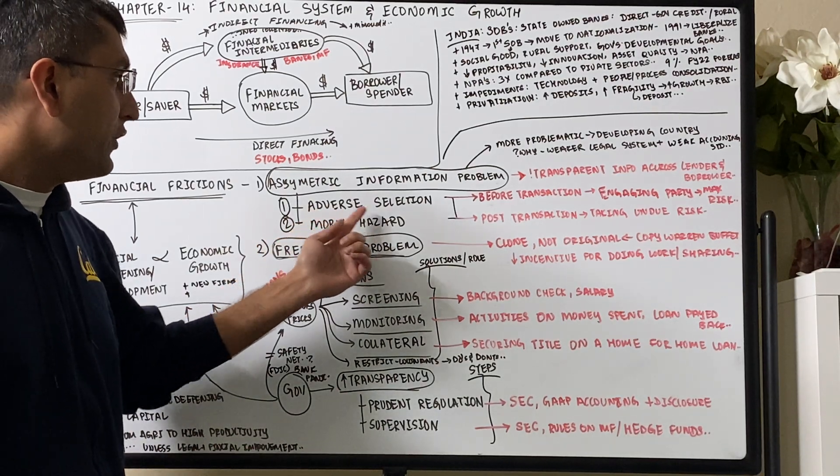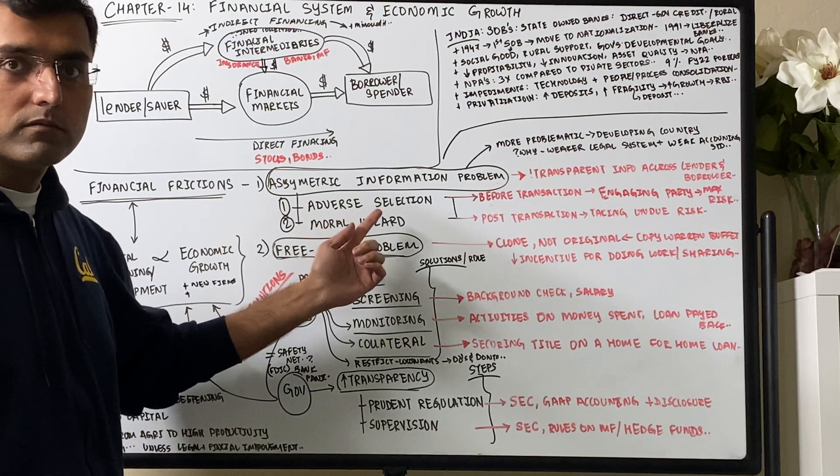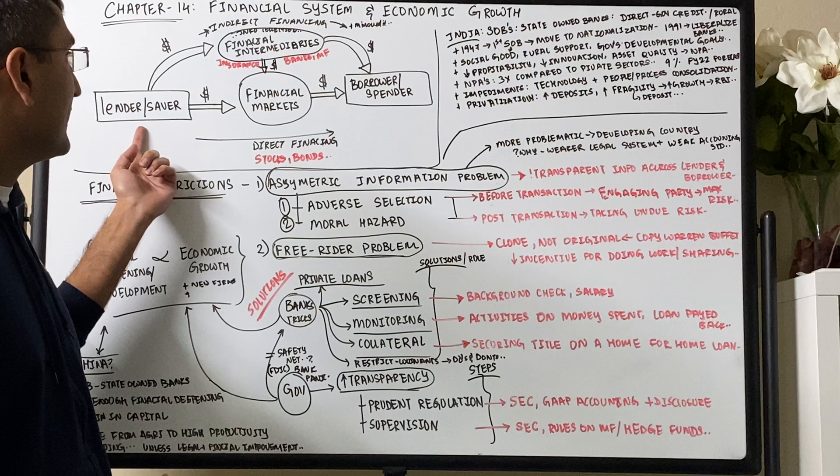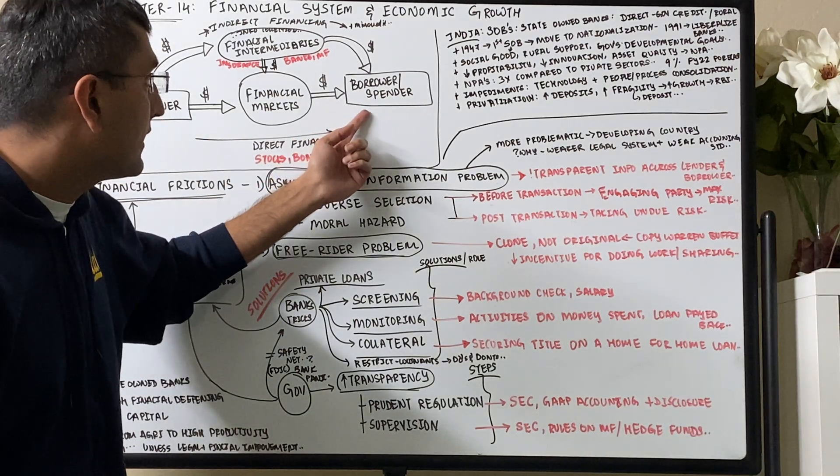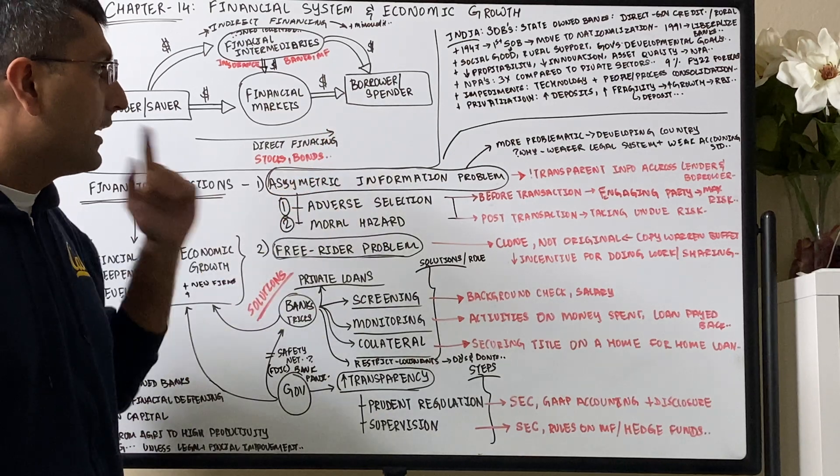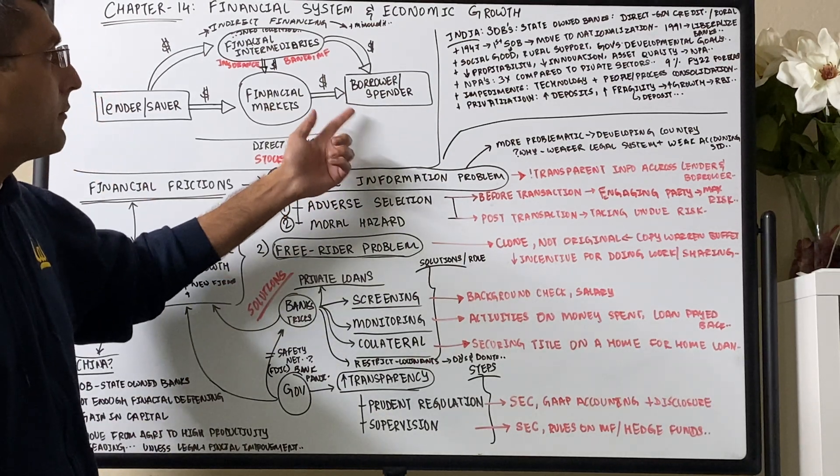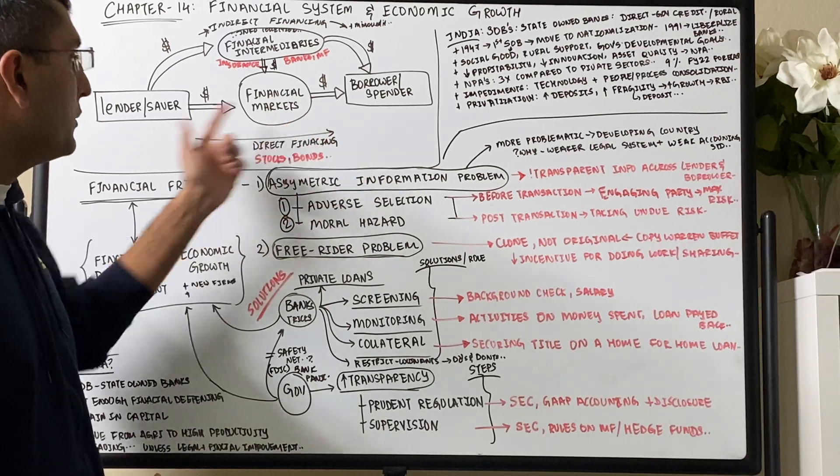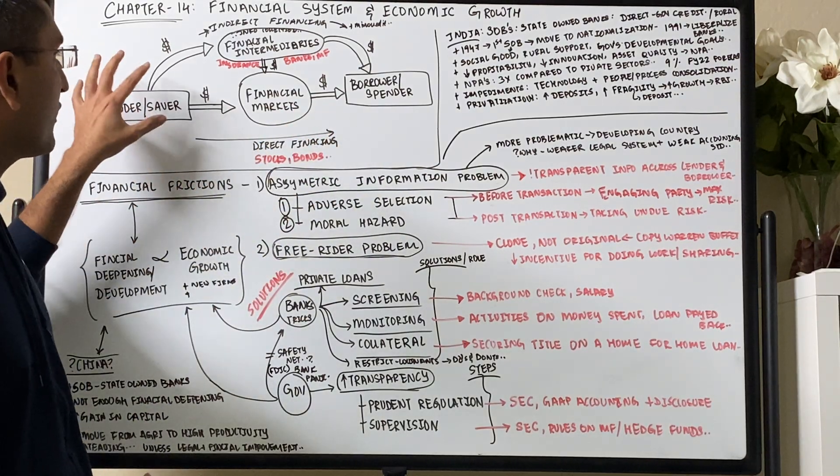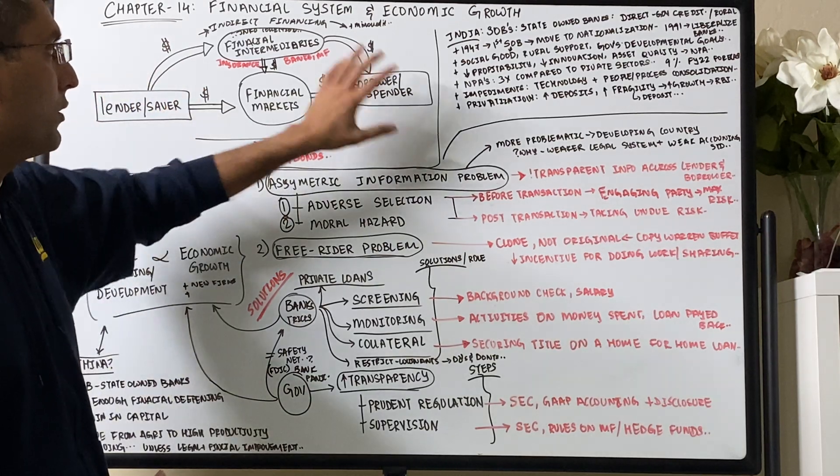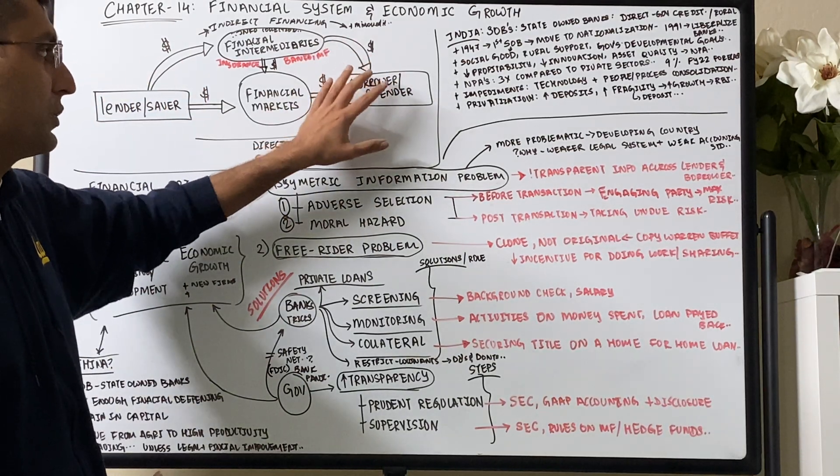Because there is this fear of adverse selection, that's part of asymmetric information. Adverse selection: the lender might think that hey, I might adversely select a riskier borrower to lend my money to, because the people who are borrowing are the ones who are trying to take risk. Adverse selection is before the transaction happens. The lender is fearful that they would lend the money to the borrower who's risky.